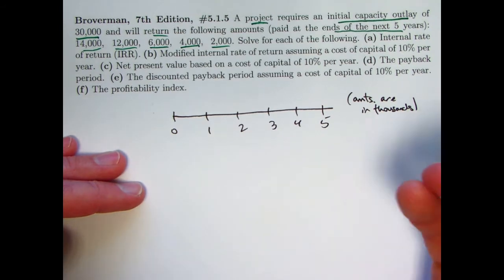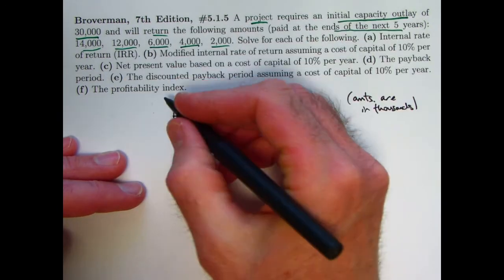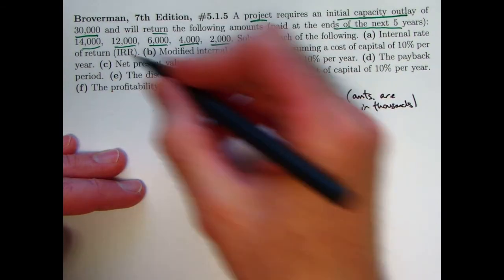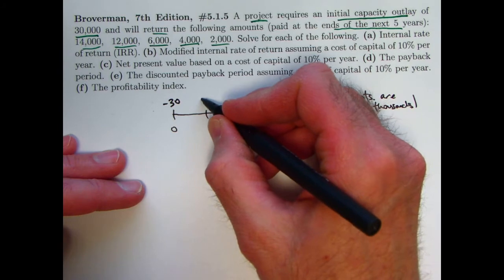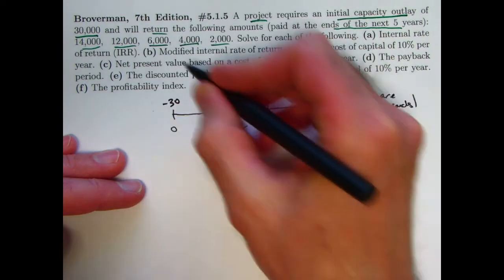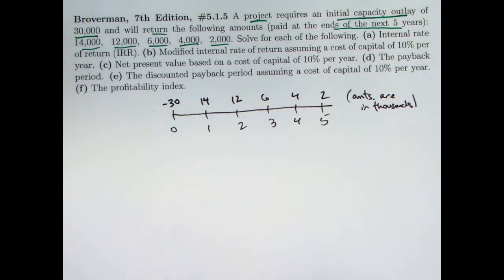And thinking about net outlays, the $30,000 is money going out of your hand right away. I'll write that as negative 30. Then at time one, you've got a return, a positive quantity of $14,000. I'll write that as 14. Then 12, et cetera, 6, 4, 2. So that's the setup.